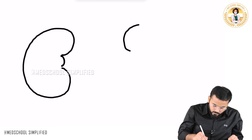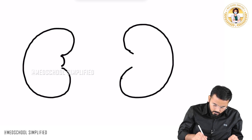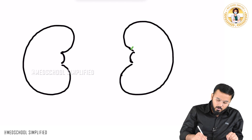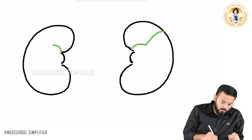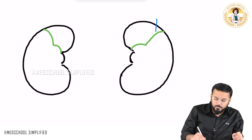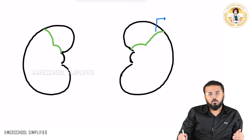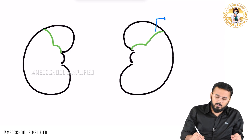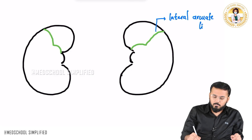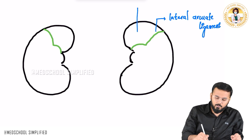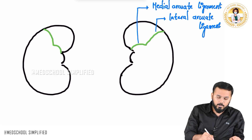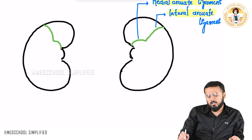So this is your right kidney and here you have got your left kidney. There is a ligament here — one ligament going all the way on each side. This ligament is called the arcuate ligament. Two arcuate ligaments are located on the outer side and two on the inner side. This one is called the lateral arcuate ligament, and this one over here is called the medial arcuate ligament.